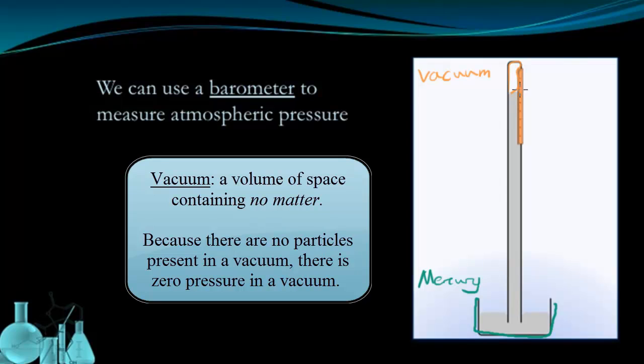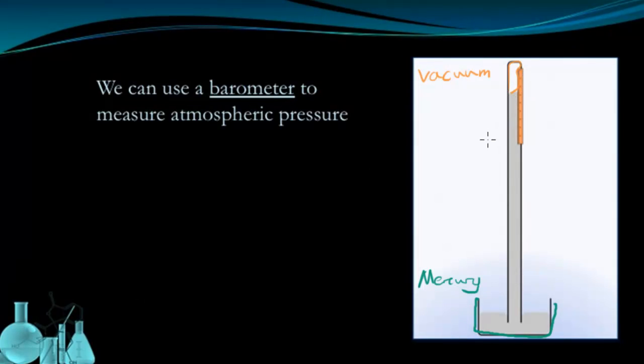So a vacuum has to have no pressure by default, because there are no particles to create collisions. So this vacuum is a zero pressure region. And you'll notice that the mercury has basically been sucked up into this tube up until a certain height.